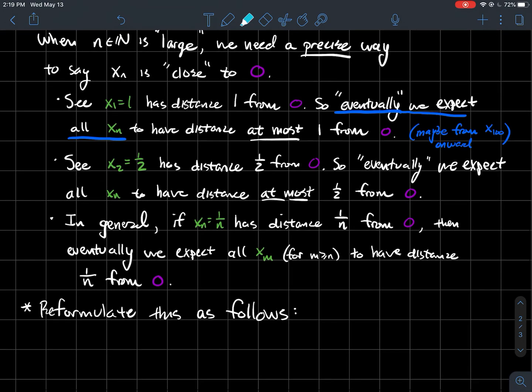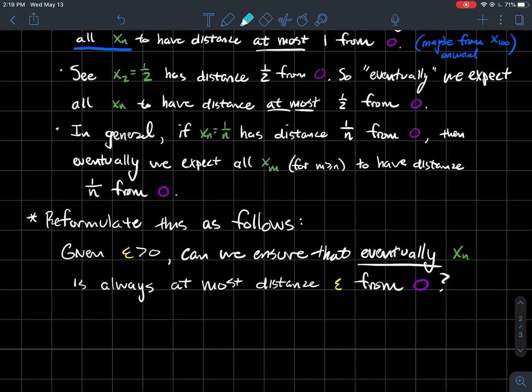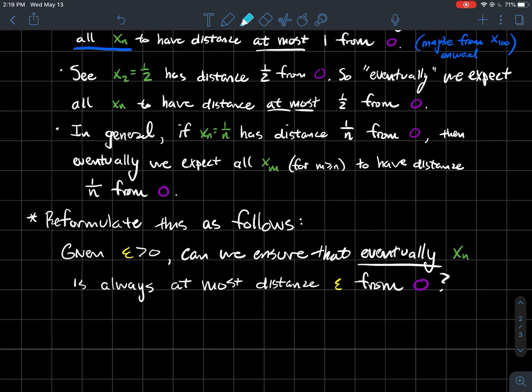Now what I want to do is reformulate this a little bit. So given any positive number epsilon, can we ensure that eventually xₙ, the terms in your sequence, are at most distance epsilon from zero? And the real power with that is that for any epsilon you pick, maybe it's 0.00001, can you tell me how far in your sequence you need to go so that every term after that point is within epsilon of your limit?